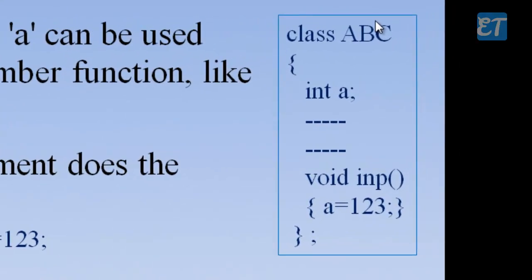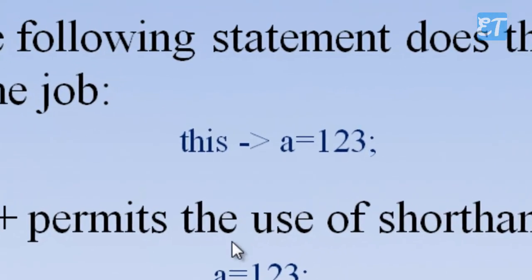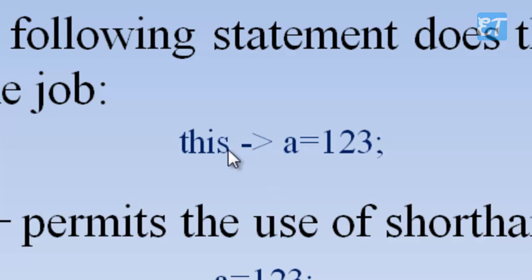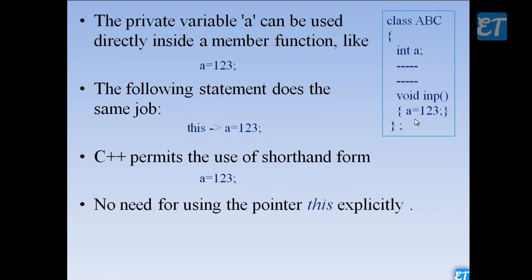Consider one class ABC. That class has a data member. This class has member functions we will manipulate. In the INP function, I will assign A equal to 123. If we have a star, we will use A equal to 123. Using the arrow operator: this->A = 123.